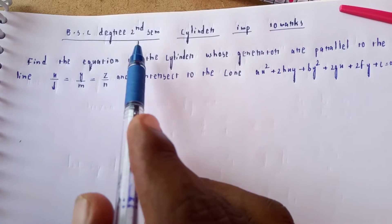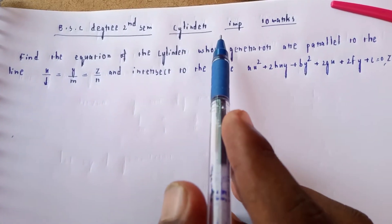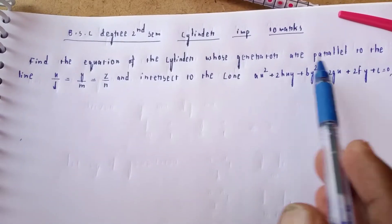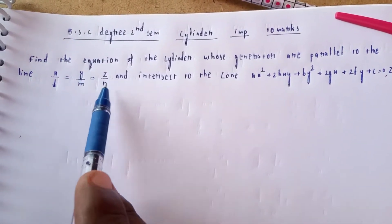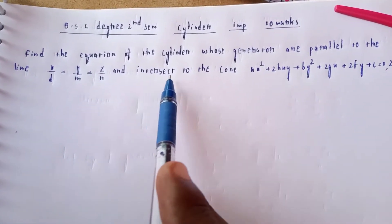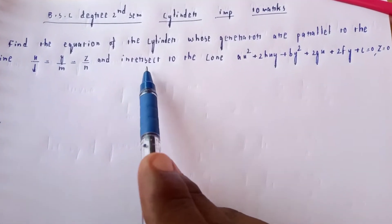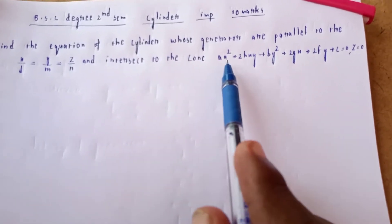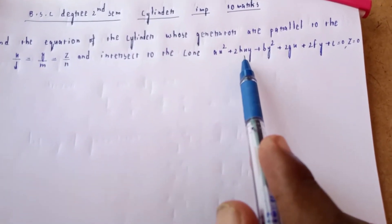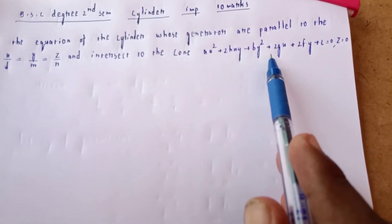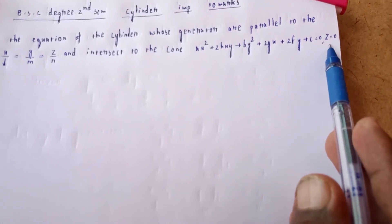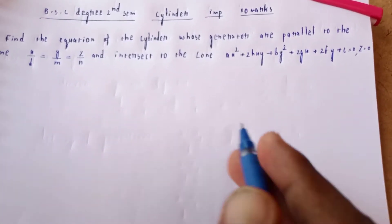Welcome to my channel. BSC degree, second year cylinder. Find the equation of the cylinder whose generators are parallel to the line x/l = y/m = z/n, and intersects the cone ax² + 2hxy + by² + 2gx + 2fy + c = 0, z = 0.